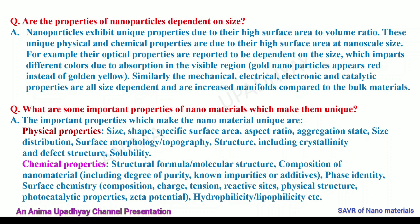What are the properties of nanoparticles dependent on size? Nanoparticles exhibit unique properties due to their high surface area to volume ratio, with unique physical and chemical properties arising from the higher surface area at nanoscale. For example, optical properties are reported to be size dependent, imparting different colors due to absorption in the visible region — such as gold nanoparticles showing red color instead of the gold and yellow of their bulk counterpart. Similarly, mechanical, electrical, electronic and catalytic properties are also size dependent and increased many folds compared to bulk materials.